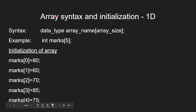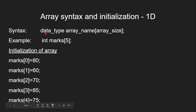Coming to the next slide, they have given the syntax and initialization of a one-dimensional array. Here, for example, they give marks of students. The syntax has three parts: data type, array name, and array size. Data type is the type of elements in the array, array name is the name given to reference it, and size is the capacity — how many elements can be held. For example, int marks[5]: int is the data type, marks is the array name, and array size is 5, meaning this integer array can hold 5 elements.